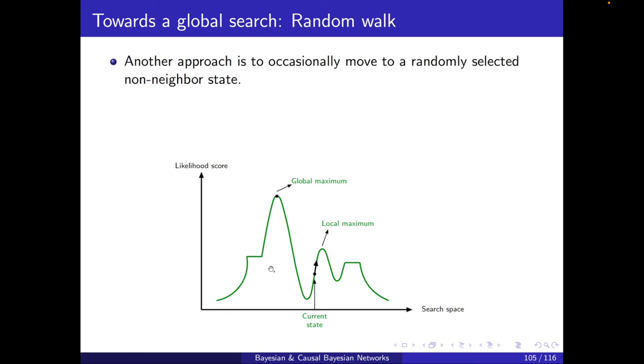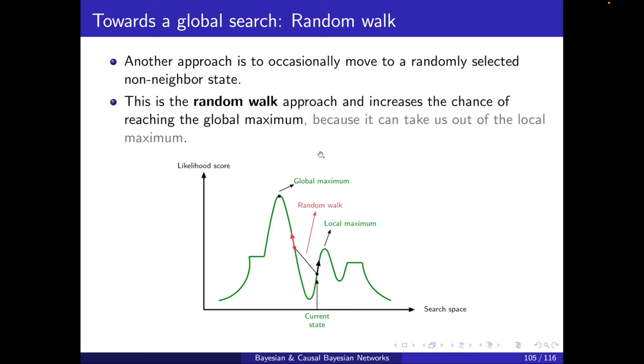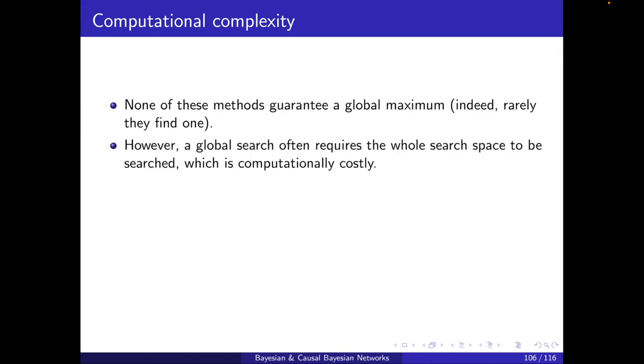Another approach is to occasionally move to a randomly selected non-neighbor state. So imagine that we are in this current state. The idea is that once in a while, we use a random walk and go to another state. This is the random walk approach and increases the chance of reaching the global maximum, because it can take us out of the local maximum. Now, note that none of these methods guarantee a global maximum. Indeed, rarely they can find one. However, a global search often requires the whole search space to be searched, which is computationally costly. So you may ask, why not use a global search? This is the reason. It's quite computationally costly.